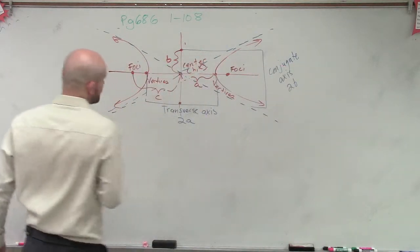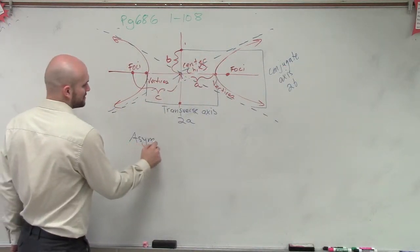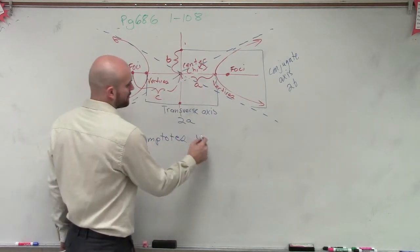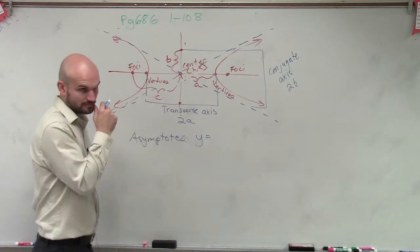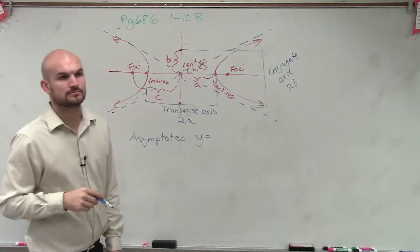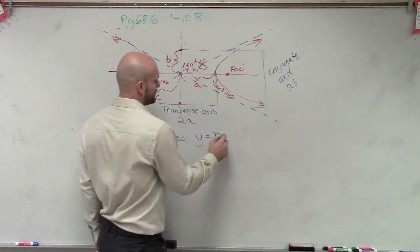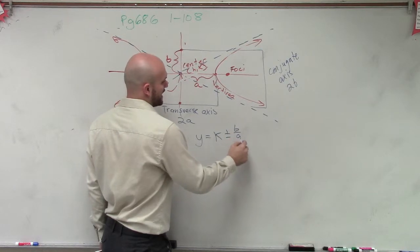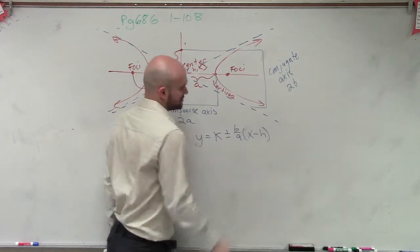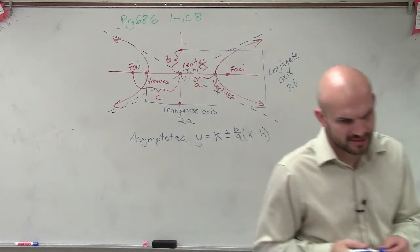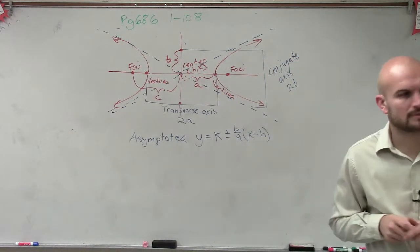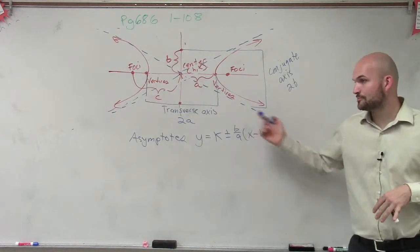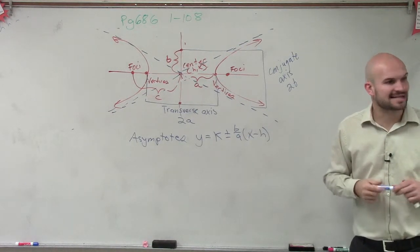So we also, for a hyperbola, are going to have to know what asymptotes. And the equation for asymptotes are going to be y equals k plus or minus b divided by a times x minus h. So if you're given your k, your b, and your a, and your x minus h, then you can go ahead and find the asymptotes.